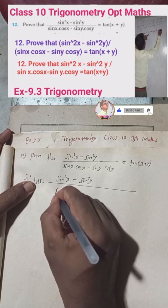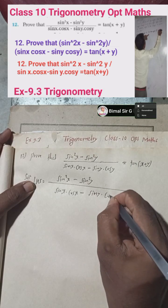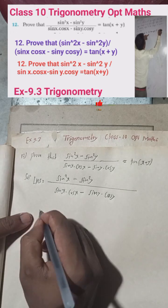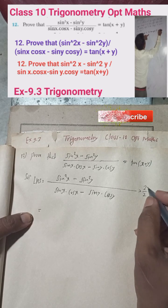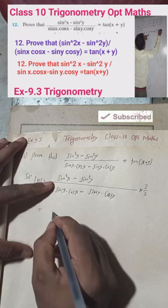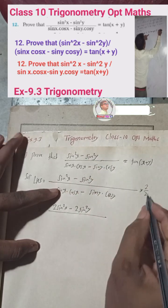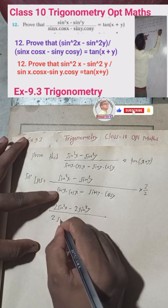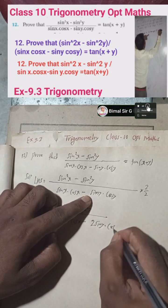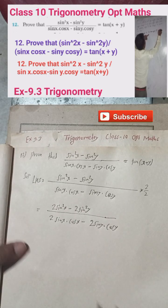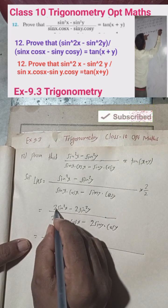LHS is equal to (sin²x − sin²y) / (sinx·cosx − siny·cosy). What we will do is multiply both numerator and denominator by 2. Since 2/2 equals 1, the value doesn't change. So we get (2sin²x − 2sin²y) / (2sinx·cosx − 2siny·cosy).